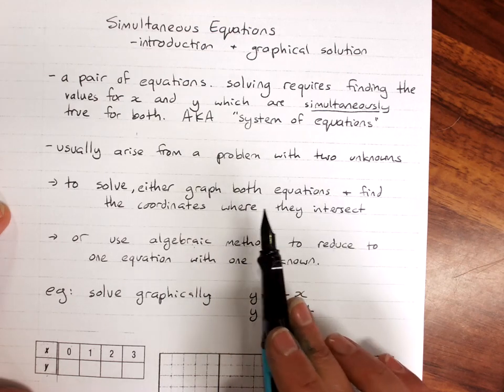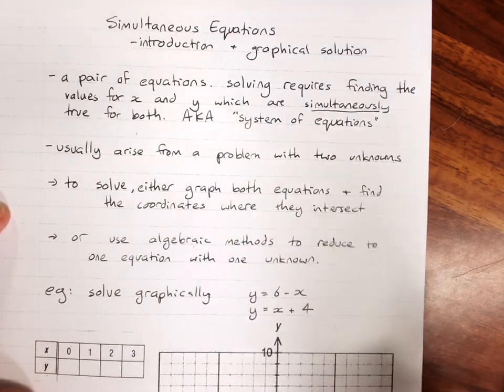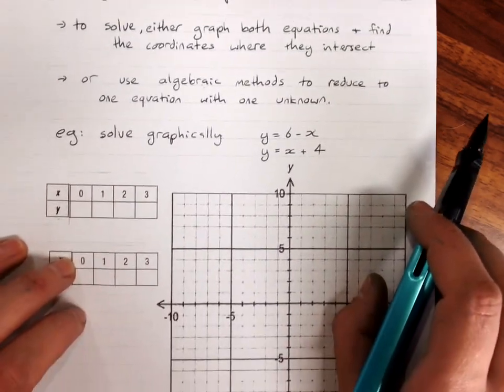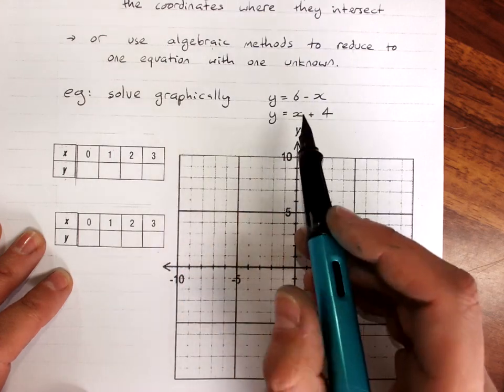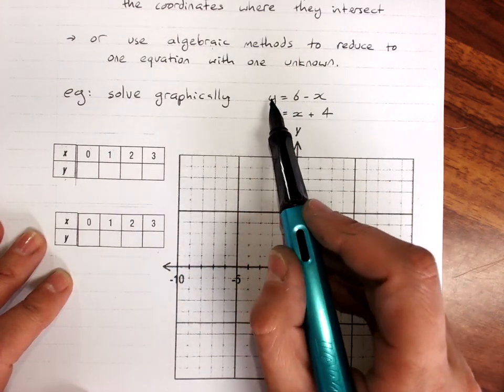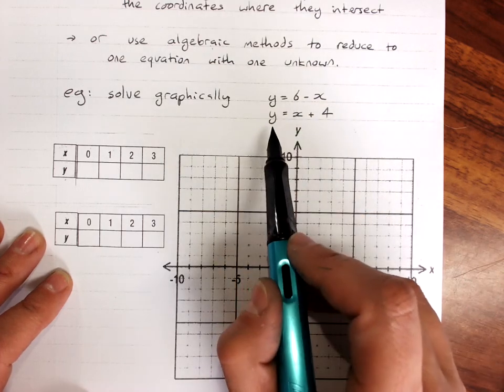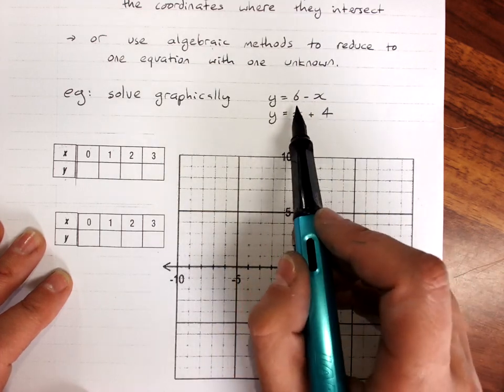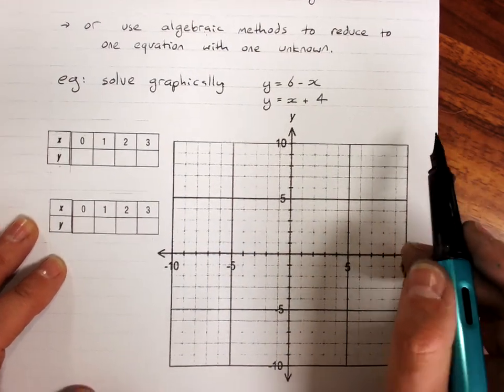But you can graph both equations and find the coordinates where they intersect. So, this is actually the equations that come out of the Tim and Tom problem. Because between them, y plus x, Tim's amount plus Tom's amount would be 6. And Tom has $4 more than Tim.